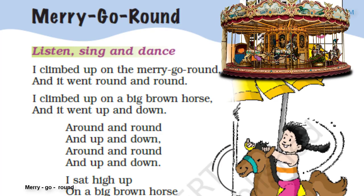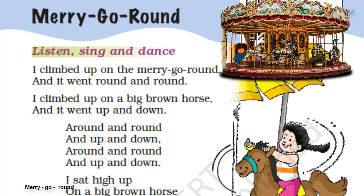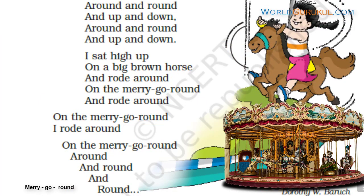I climbed up on the merry-go-round and it went round and round. I climbed up on the big brown horse and it went up and down, around and round, and up and down. I sat high up on a big brown horse and rode around on the merry-go-round, and rode around on the merry-go-round, I rode around on the merry-go-round, around and round, and round.